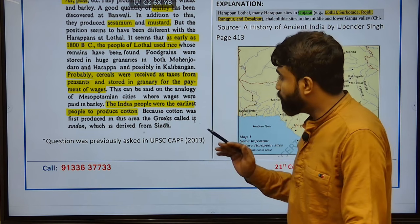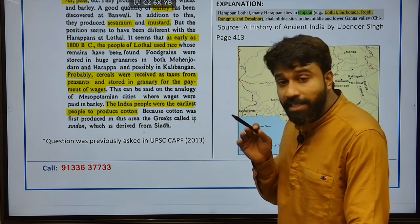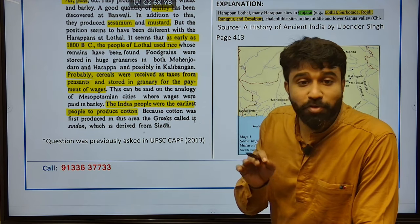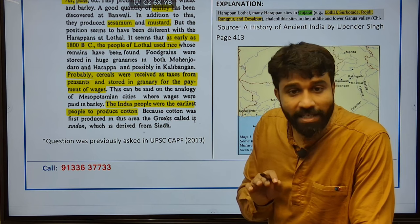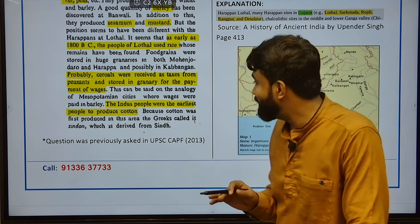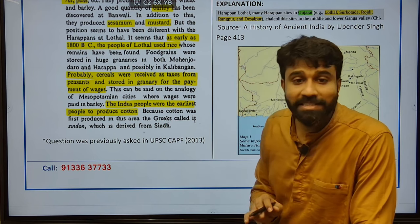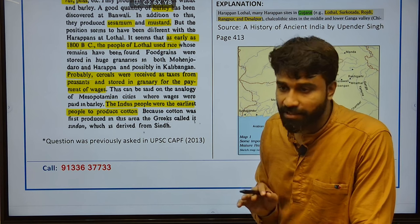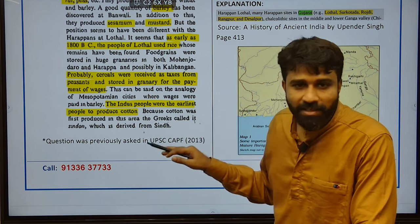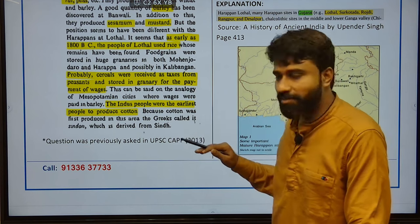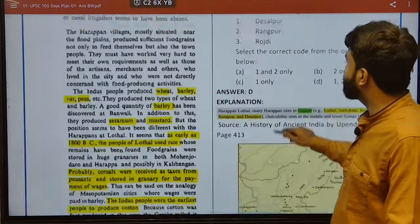Greeks called this early produced cotton from the Indus as 'Sindan' — because it was produced by the Sindh region. That is important.